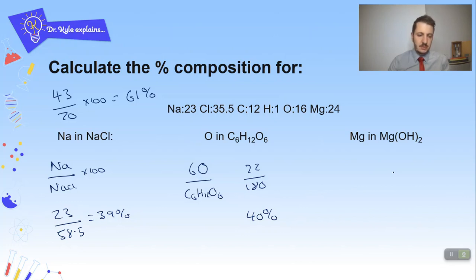And then here, magnesium in magnesium hydroxide. So that's 24 over 58. So 24 divided by 58. So 24 divided by 58 times 100, 41%. Really well done if you got those right.